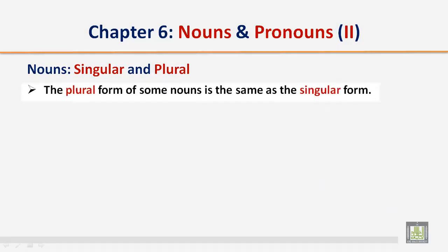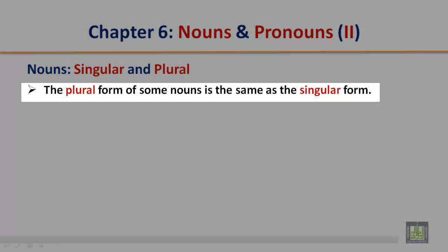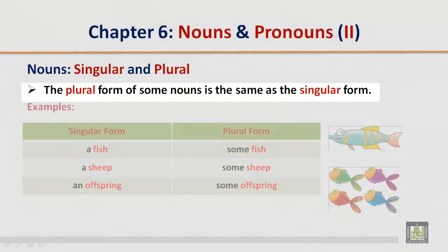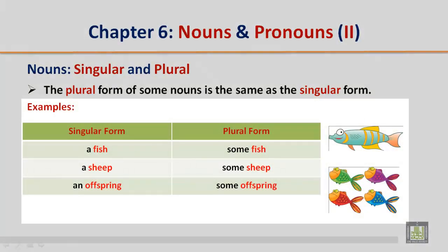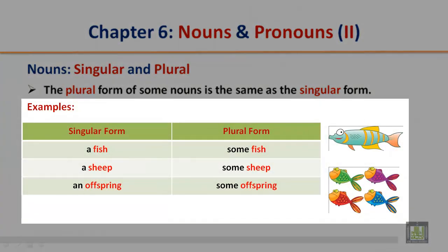The plural form of some nouns is the same as the singular form. For example: a fish, some fish. A sheep, some sheep. An offspring, some offspring.